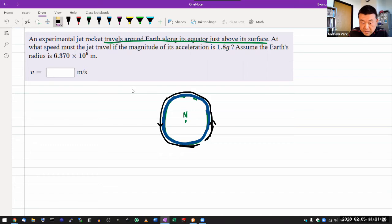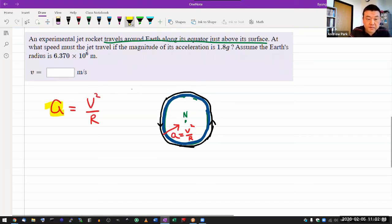v squared, the tangential speed squared, divided by r, the radius of the circle. It says at what speed must the jet travel if the magnitude of its acceleration is 1.8 g. So in this expression a is equal to v squared over r, it's telling me what a is. That's 1.8 g or approximately 18 meters per second squared. So that's the acceleration.